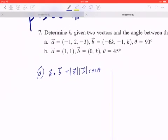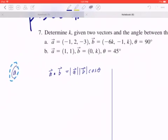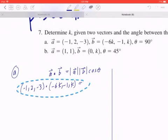So if you look at the left hand side, A is given to be (-1, 2, -3) dotted into, and if you look at B, (-6k, -1, k).